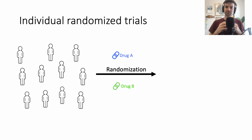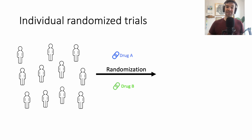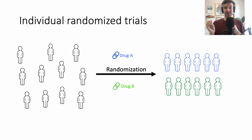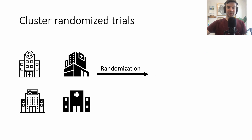Now we need to decide how to randomize individuals. The most common approach is an individual randomized trial — each person gets randomized to drug A or drug B. As a result, you have two groups of individuals that look almost identical, except one received drug A and the other received drug B.